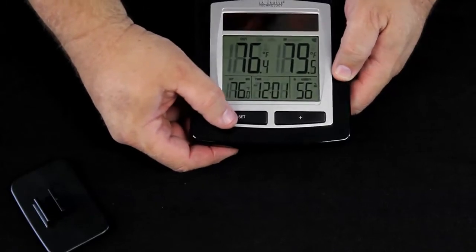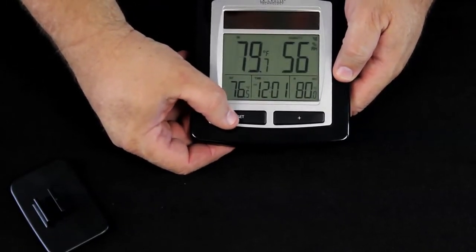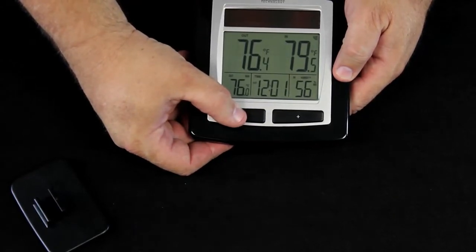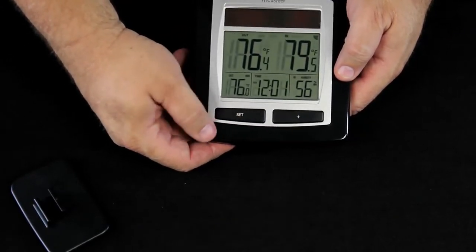We need to set that time, and to do that, we're going to press the set button. Pressing the set button also changes how our display looks. We hold the set button down, though, and now the hours are flashing.